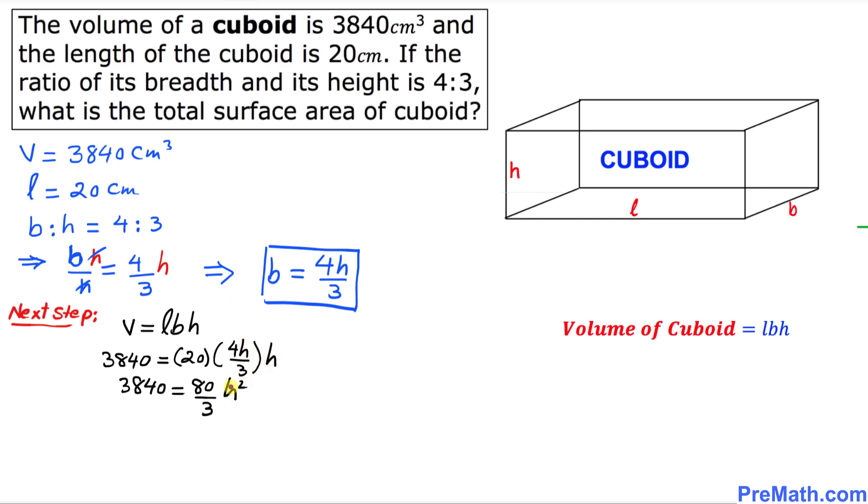Now we want to isolate h squared, so I'm going to multiply by the reciprocal of 80 over 3 on both sides. This 80 and 80 cancels out, this 3 and 3 is gone, and if we multiply this quantity 3840 with 3 over 80, we get 144 equals h squared.